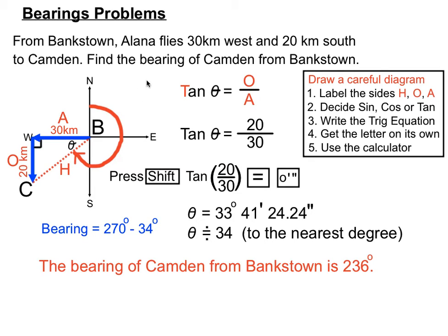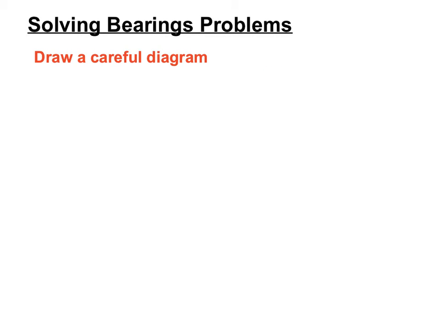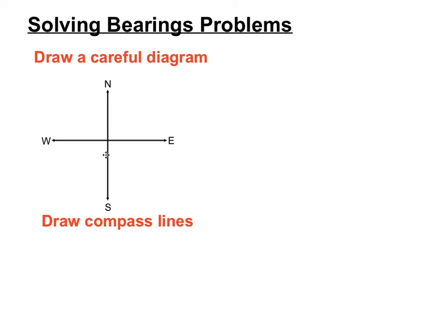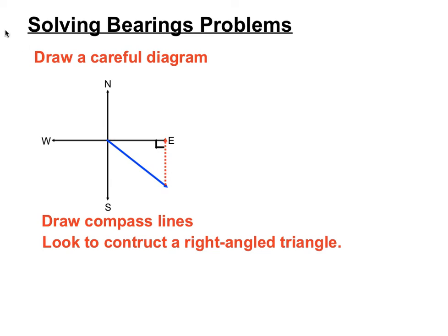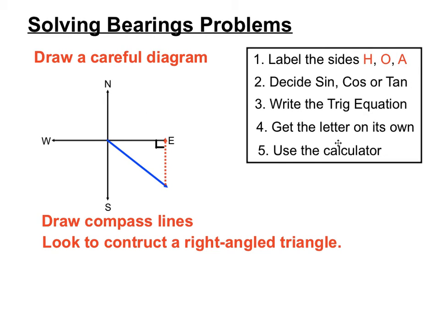To summarize, solving bearings problems involves drawing careful diagrams with compass lines, then constructing a right angle triangle up to the horizontal or across to the vertical axis. Once we have a right angle triangle we can use sine, cosine, tan, and even Pythagoras, following our normal steps for finding missing sides or angles using trigonometry.